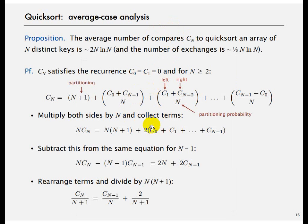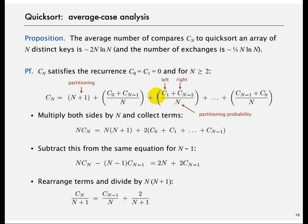The analysis shows that partitioning costs N compares because you are doing N comparisons. After that, there is a cost for sorting each of the individual sub-arrays. So you are sorting C(0) and C(N-1), then C(1) and C(N-2), and so on. That is the basic recurrence.